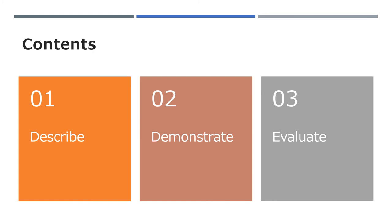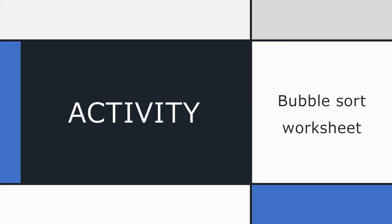You should now be able to describe the bubble sort — traversing the list, swapping any items that are the wrong way around, and repeating that traversal until there are no more swaps. You should be able to demonstrate it on paper and evaluate it: it's a very slow sort and we should avoid it unless the list is very short. In the next lesson we'll actually program the bubble sort in Python. Bye for now.